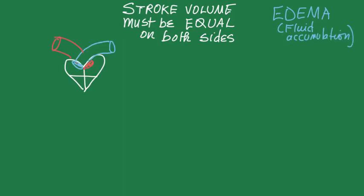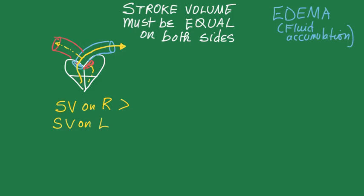Stroke volume cannot be unequal. Here's an example of what happens when the right side is pumping more than the left. The right side is shown by the solid arrow and the left side is shown by the dotted arrow. If the stroke volume on the right side of the heart is greater than stroke volume on the left, then the blood being pumped to the lungs from the right side is much more, and so fluid accumulates in the lungs.